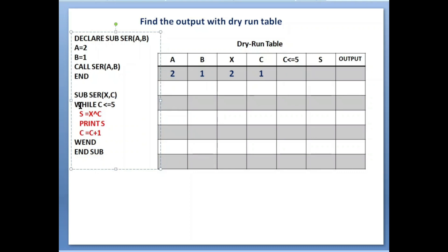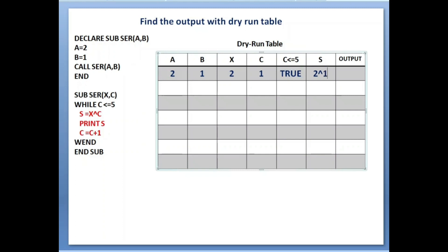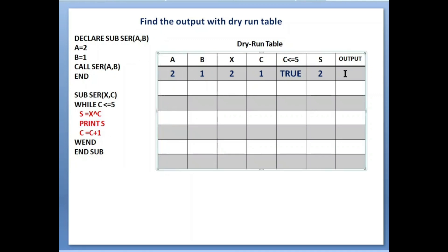After this, the loop starts. The while condition is c less than or equals to 5. Value of c is 1, so 1 less than or equals to 5 — condition is true. Inside the loop, the first line is s equals to x exponential c. x value is 2, c value is 1, so 2 to the power of 1, which means s equals 2. Print s — whenever you see print, we write that value in the output screen, so output is 2.